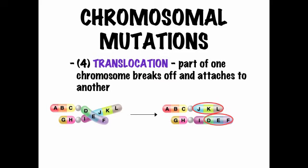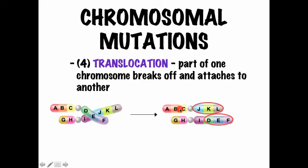The last type of chromosomal mutation is called translocation, and it's the only one that involves two different chromosomes. During mitosis — probably during prophase when chromosomes are all in the nucleus — two sister chromatids from different chromosomes overlap and stick together. When the chromosomes are moved apart, a piece of one chromosome gets stuck to the other and vice versa. The result is a chromosome reading A, B, C, J, K, L — containing the wrong segment of another chromosome entirely.